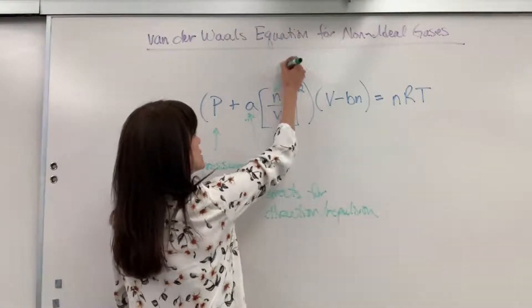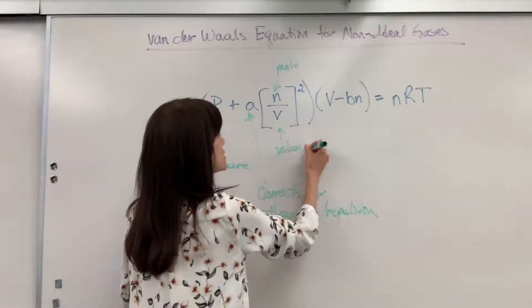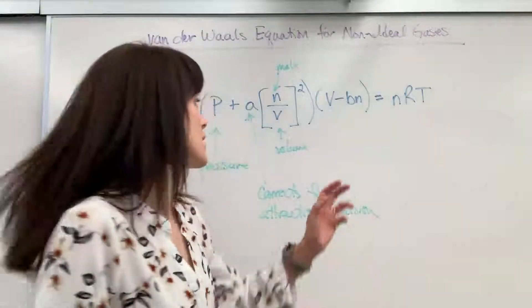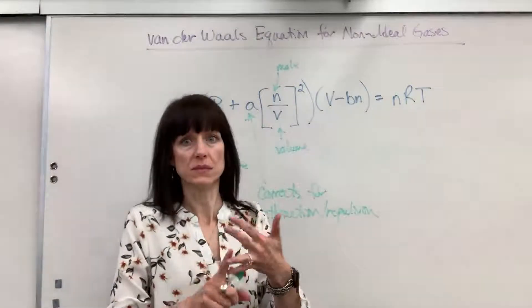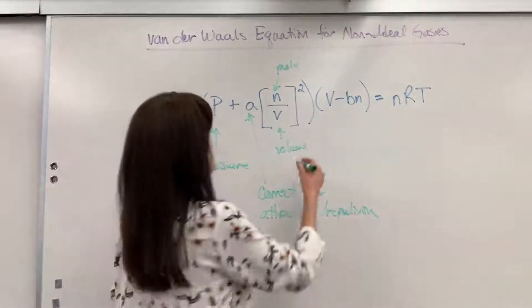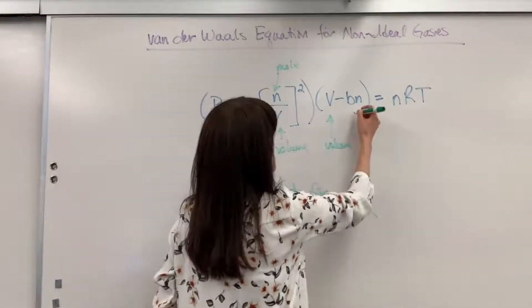N is still going to be mole. V is still volume. And you still have to use all of the units that are attached to the gas constant. So ATM, liter, Kelvin, mole. V of course is still volume.